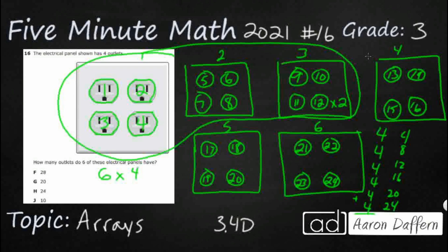So let's look at why some of these incorrect answers might have been chosen. You see this 28? It's kind of sneaky, because if you drew six of your own panels and then included the original four outlets separately, that gives you 25, 26, 27, 28 — that's actually seven panels. So if you drew six more instead of using the existing one, seven panels would get you 28, and that's not what we want. If you only drew five panels, that would give you 20, but we know we're looking for 24.